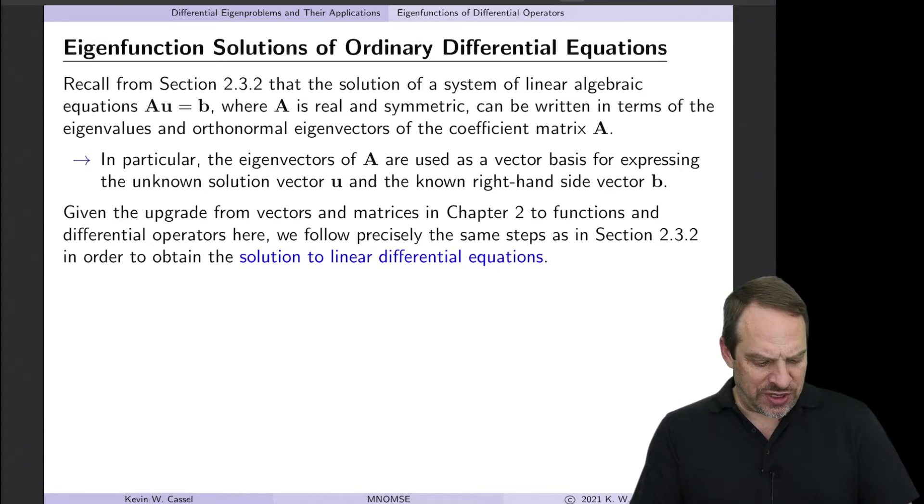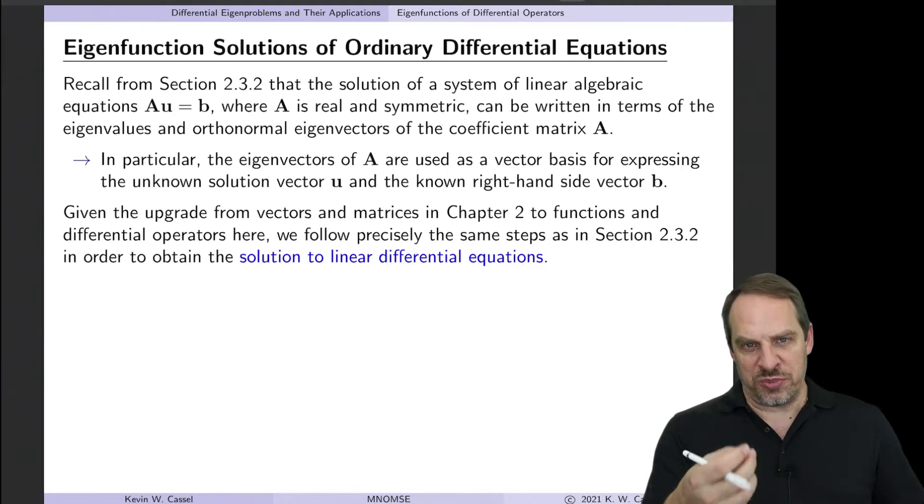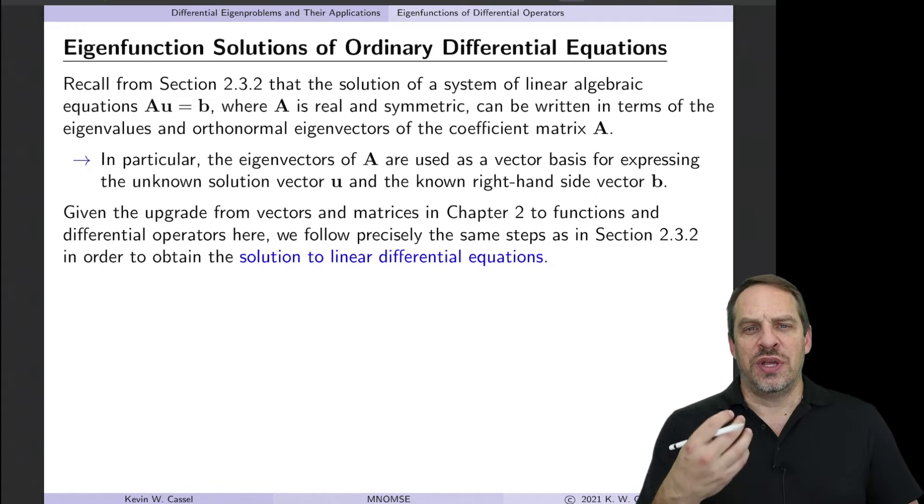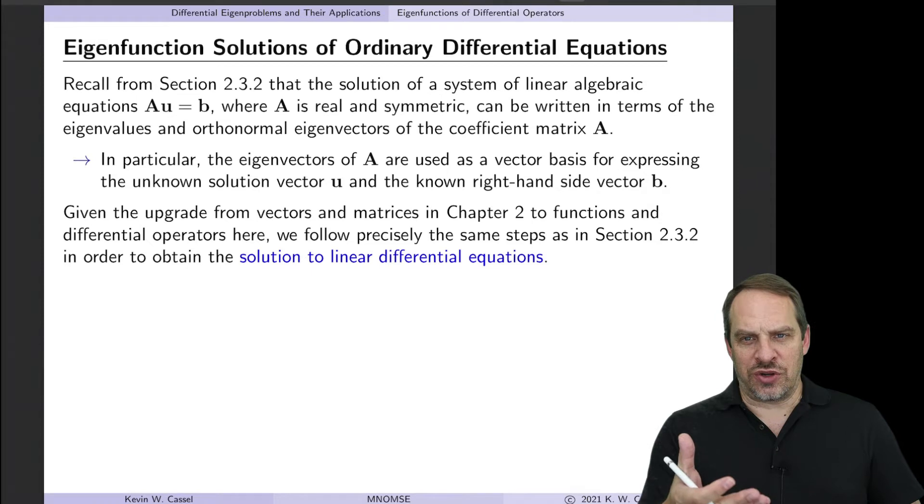This goes back to a technique that we introduced in Chapter 2 for solving a system of linear algebraic equations AU equals B. If A was symmetric in that case, the eigenvectors could be made to be mutually orthogonal, and they formed a very convenient basis for expressing the solution vector as well as the right-hand side vector in order to write the solution as a linear combination of those basis vectors.